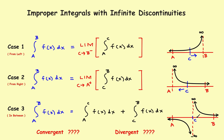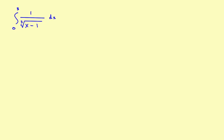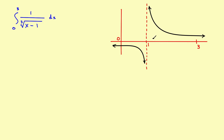Let's take a look at what a problem looks like. We want to find the integral from 0 to 3 of 1 over the cube root of (x minus 1). It will help if you have the graph, so we'll stick one up here to look at it. You'll find that when x is equal to 1, you've got 1 minus 1 — division by zero — so you'll have an asymptote there.